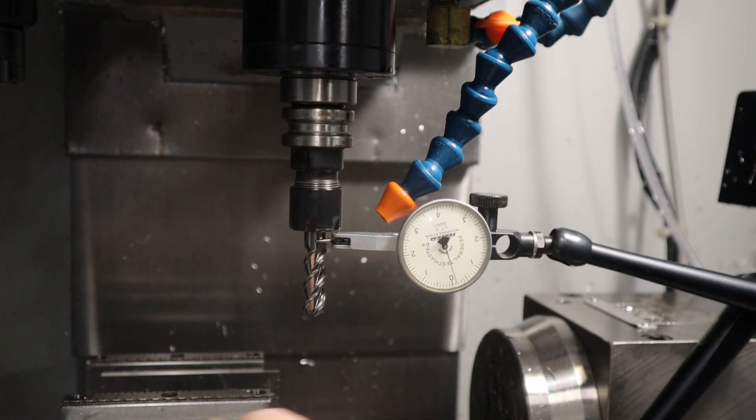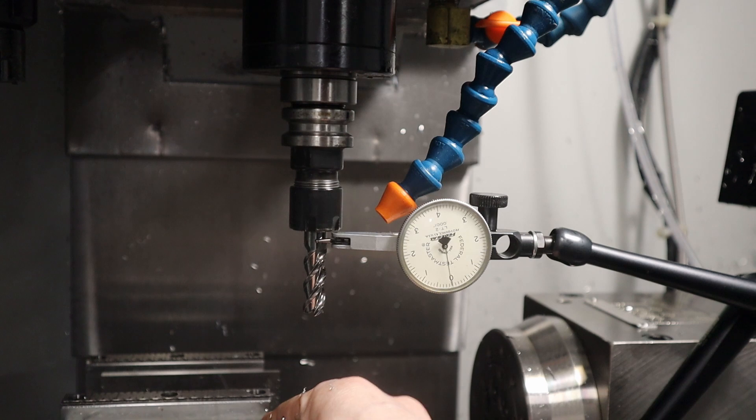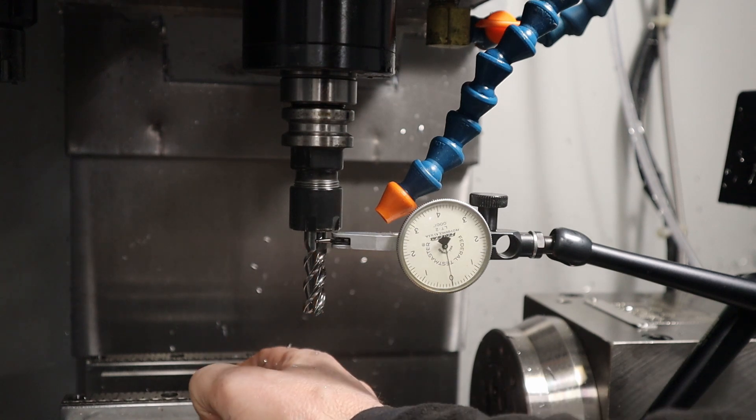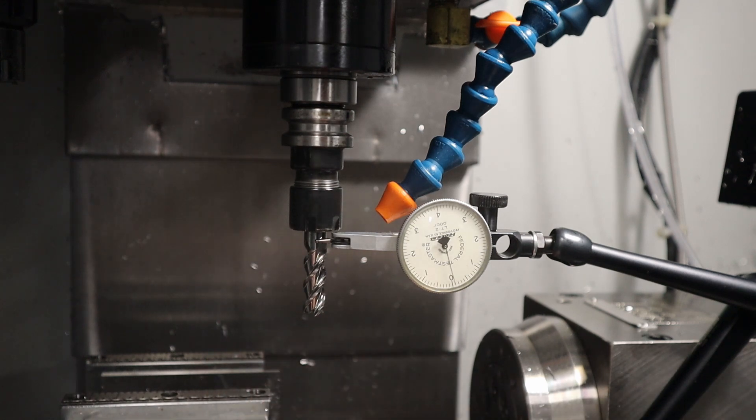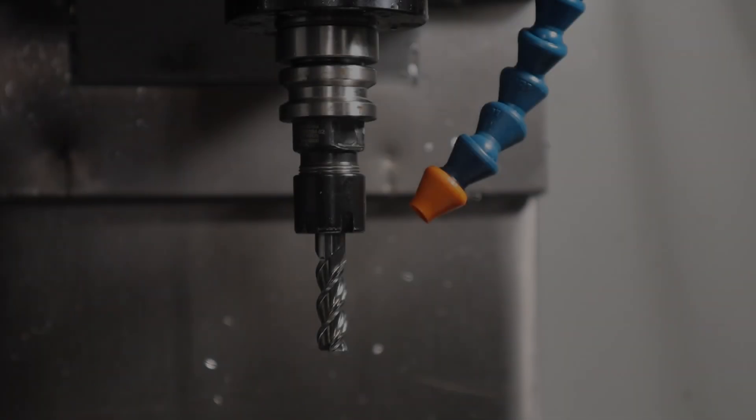Now if I do the same thing on the Y, you can see I can get a lot more movement. I'm pushing and pulling on this. It is pretty rigid, but I can't expect it to be rigid to less than one thousandth of an inch. Getting to maybe three or four ten thousandths of an inch certainly seems to be achievable.